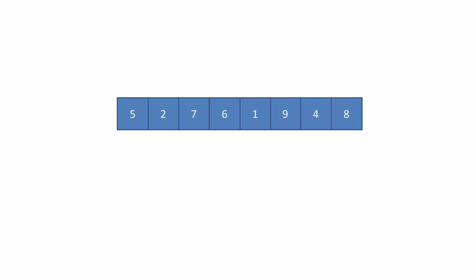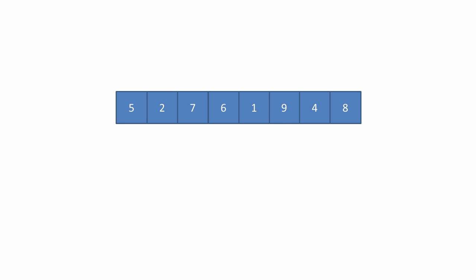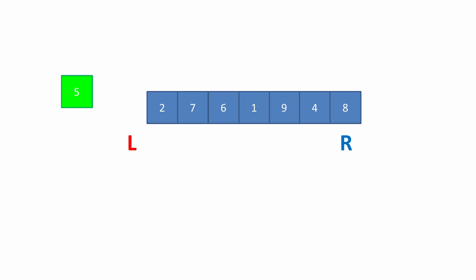Let's see how to do this. We have a list, a left pointer and a right pointer, and we need to choose a pivot value. The pivot value can be anything in the list, but it might as well be the first value.